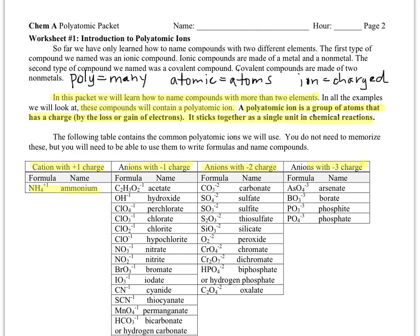The difference is that so far in the previous two packets we've talked about compounds made with just two different elements, either a metal and a non-metal or two non-metals. But in this packet we're going to learn how to name and draw pictures of compounds with more than two elements in them.